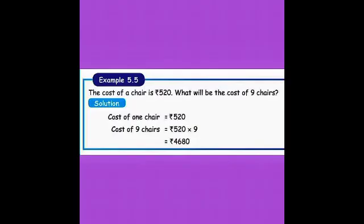Cost of a chair is rupees 520. What will be the cost of 9 chairs? Here cost of 1 chair is given and cost of 9 chairs we want to find. Cost of 1 chair equals rupees 520. Cost of 9 chairs equals rupees 520 multiplied by 9. Let's do the multiplication. We should know the 9 table. 9×0 is 0. 9×2 is 18, carry over 1. 9×5 is 45. 45 plus 1 is 46. So cost of 9 chairs equals rupees 4680.